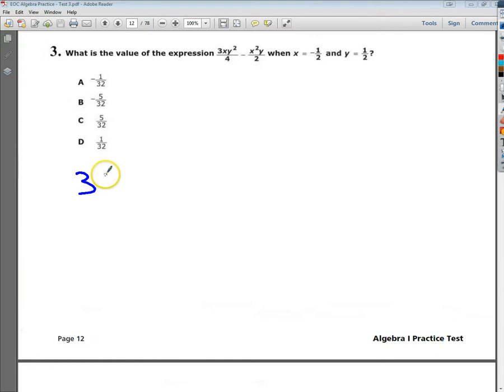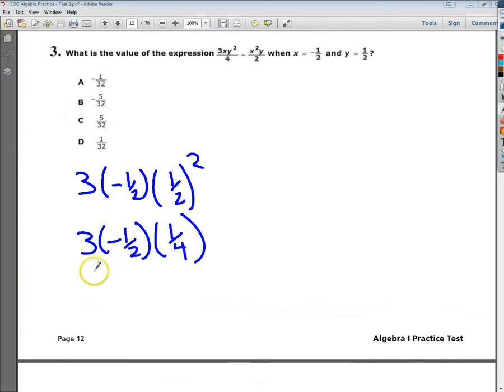So, I'm going to deal with 3xy squared first. My x, instead of x, I'm going to just use my negative 1 half. And then my y squared, I'm going to put 1 half squared. So, this would be 3 times negative 1 half times 1 fourth. And then I deal with 3 times negative 1 eighth. So, I end up with negative 3 eighths. That would be my top term.